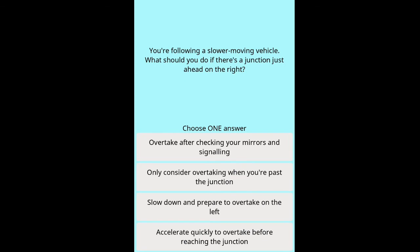Question: You're following a slower moving vehicle — what should you do if there's a junction just ahead on the right? Options: overtake after checking your mirrors and signalling, only consider overtaking when you're past the junction, slow down and prepare to overtake on the left, accelerate quickly to overtake before reaching the junction.